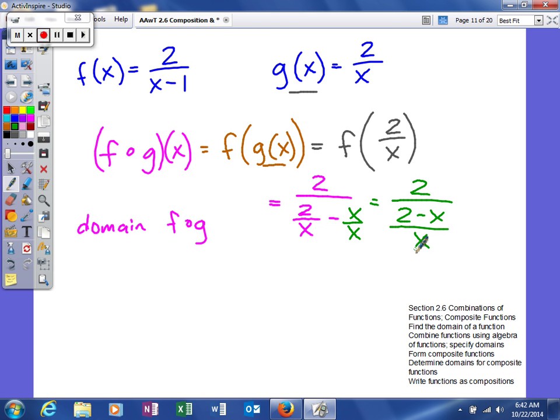And then instead of trying to divide those two things, I'm going to multiply by the reciprocal. So I'll have 2 times x over 2 minus x. If I could factor anything and cancel it, I would, but nothing's factorable. So I'm going to multiply my numerators together and multiply my denominators together, and that will give me my value for f of g of x.